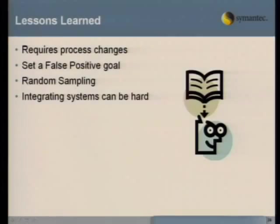Random sampling is useful. Setting a false positive goal is useful — otherwise it's like trying to achieve the nth degree of quality, which is impossible. At some point you have to find what you're comfortable with and say: we're at a 6% false positive rate, it's not perfect but good enough. Integrating these systems can also be very difficult — you may not have access to all the data you need. Work with whatever data you can get access to and mine it for your own usefulness.